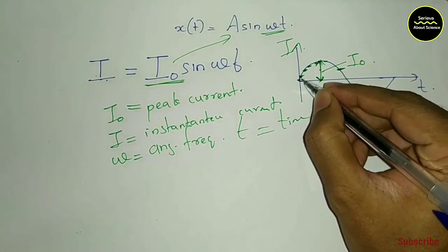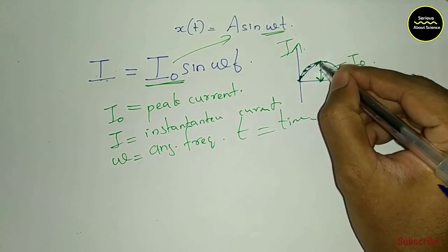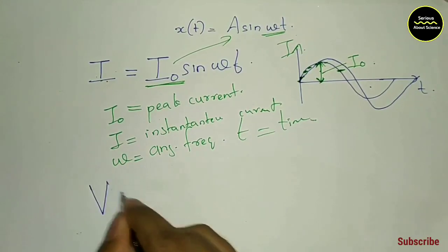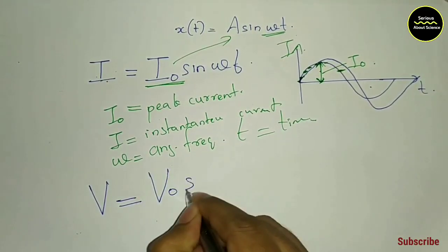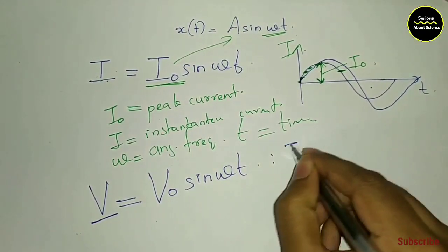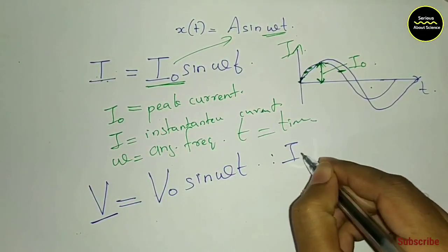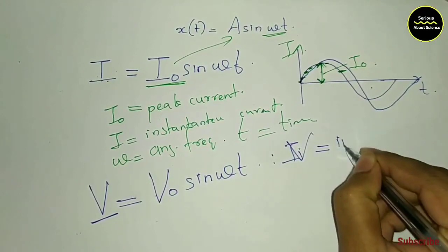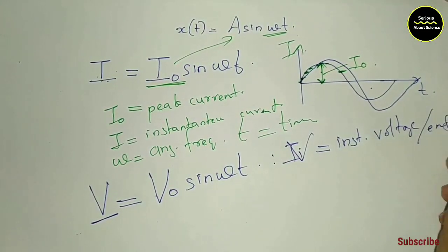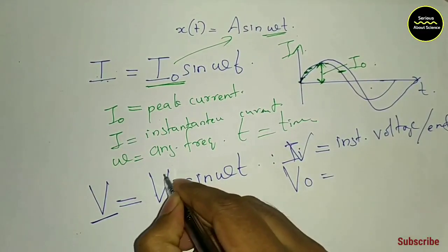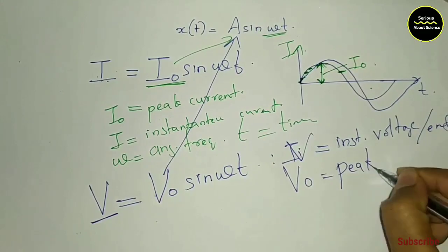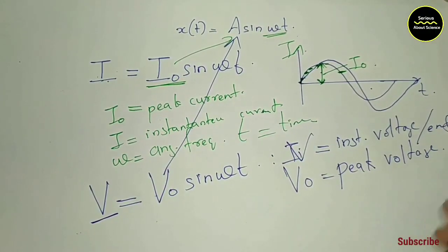Alternating EMF, alternating voltage value — that is the graph representation, one sine wave. V equals V₀ sin omega t. V is instantaneous voltage or EMF. V₀ is called peak voltage or EMF.